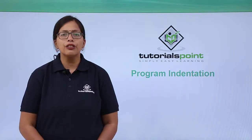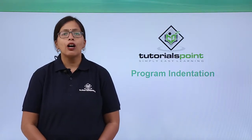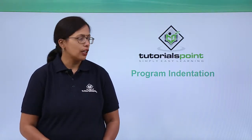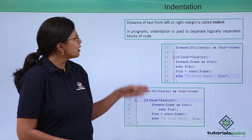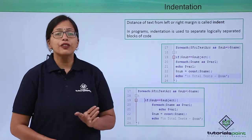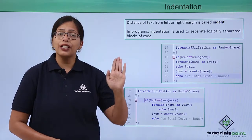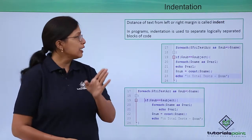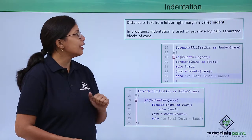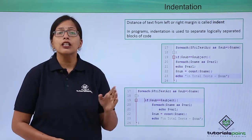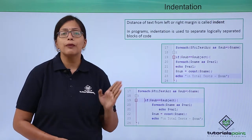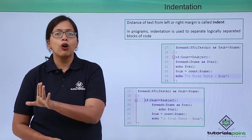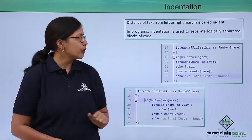In this video we are going to see how program indentation is done. The distance of text from the left margin is called the indent. In programs, indentation is used to separate logically different blocks of a program.